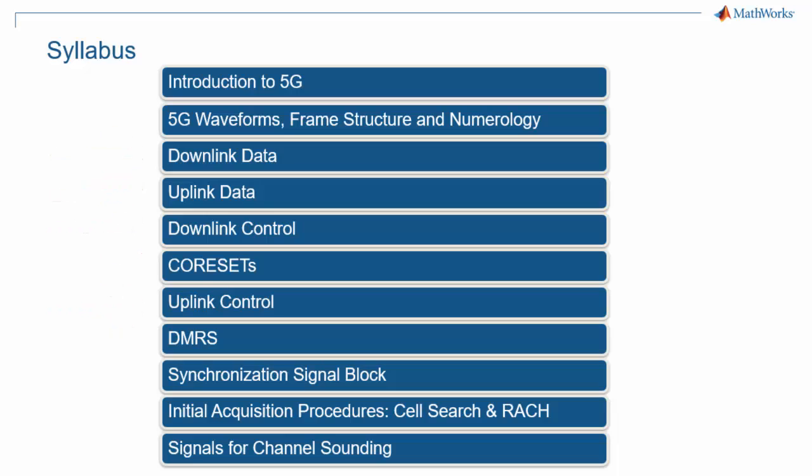An important new concept in 5G NR is core sets, or control resource sets, which are used to assign resources for control information on the downlink.